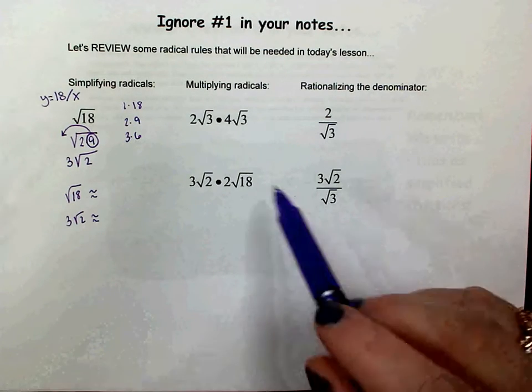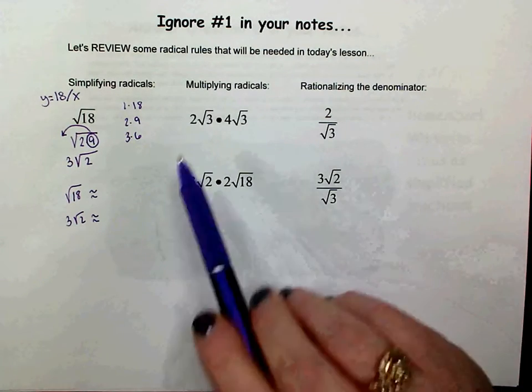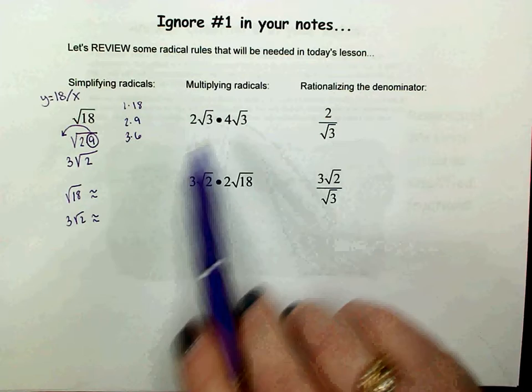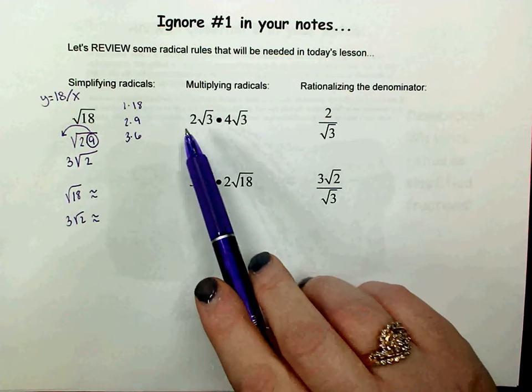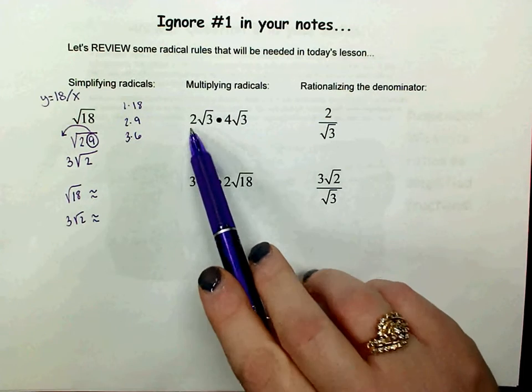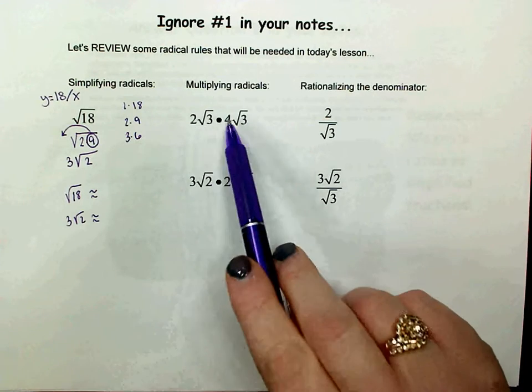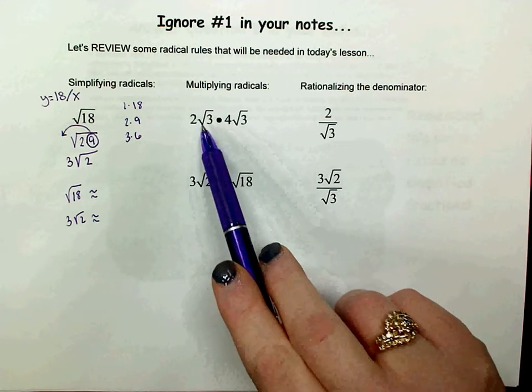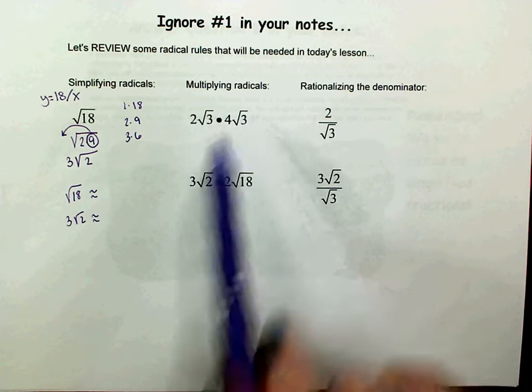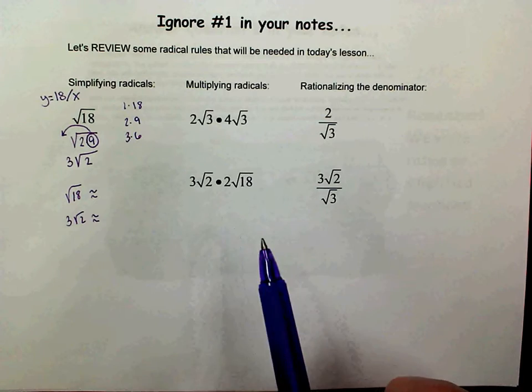Moving on to multiplying radicals. When you multiply radicals, you multiply the numbers that are outside together and the numbers that are inside the radical together.